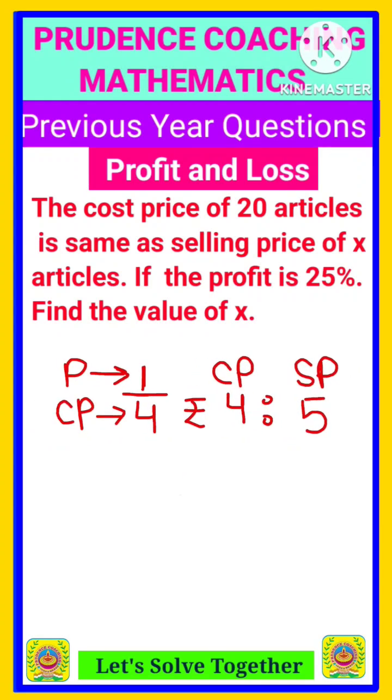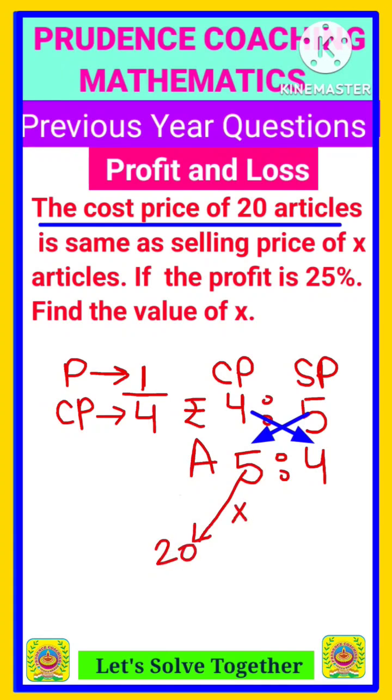You should always remember: if the price ratio is 4 is to 5, then the article ratio will be 5 is to 4, that is inverse of price ratio. Here it is said that this 5 represents what? 20 articles. Because here it is given cost price of 20 articles. So 5 into what you will do so that you get 20? 5 into 4 is 20.